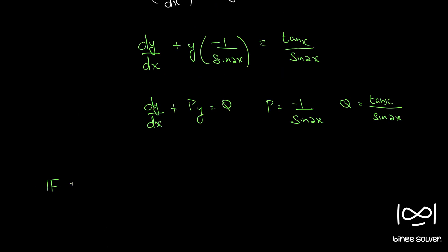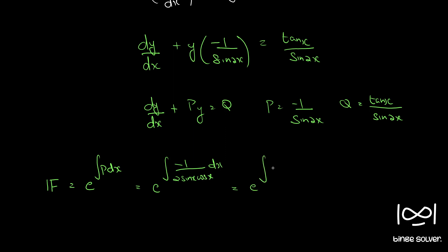The integrating factor for such a linear differential equation is given by e raised to the integral of p dx. So we can write e raised to integral of minus 1/sin2x dx. Instead of sin2x we can write 2sinx·cosx dx. Taking minus 1/2 outside and dividing numerator and denominator by cos²x.